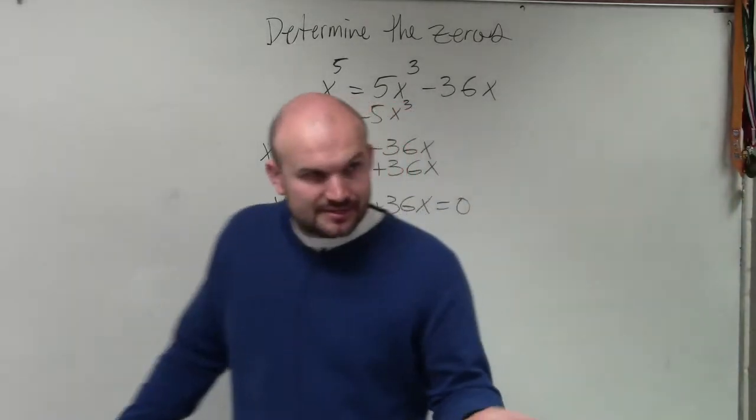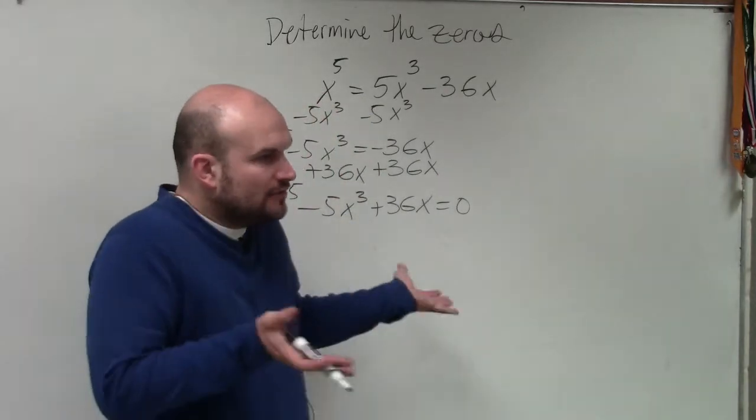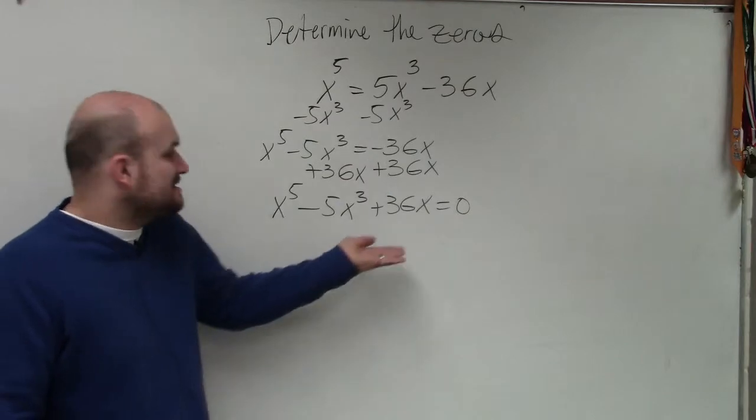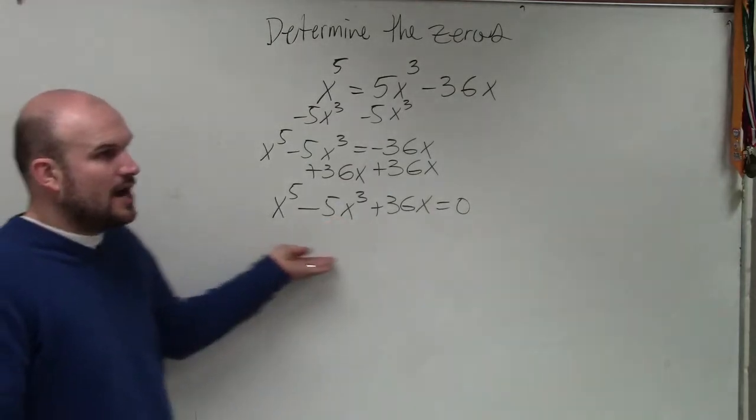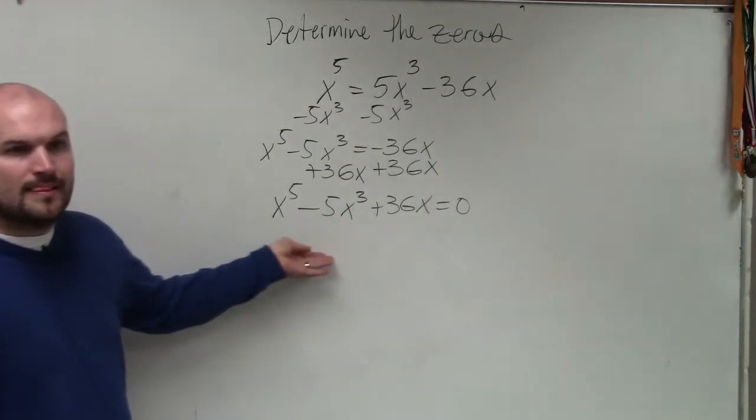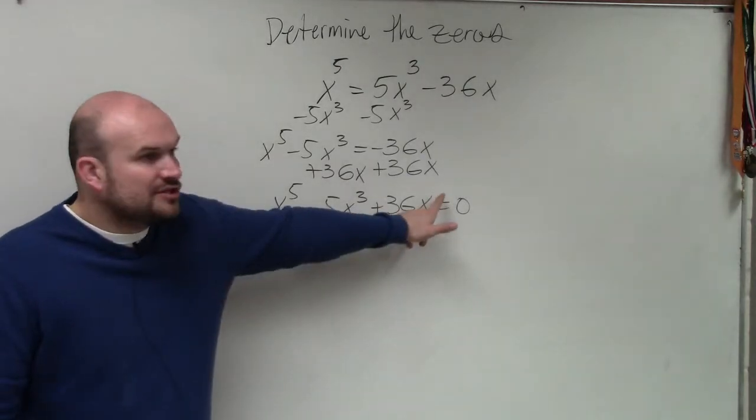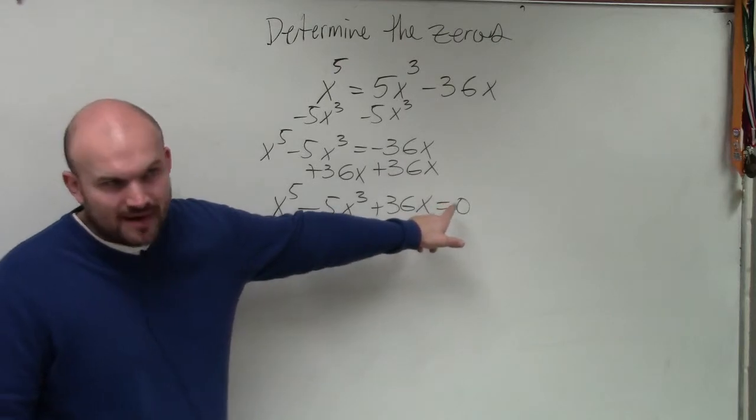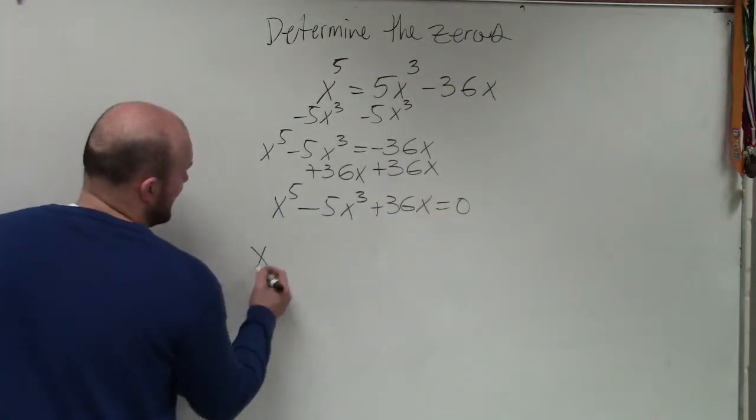Now, we have to factor this, right? To solve, the reason why we set it equal to 0 is so we can factor. So the first thing we always look at is can I factor anything out here? Is there anything they all share? And they all share an x, right? And an x just to the first power, because you can't factor anything higher than that lowest power.